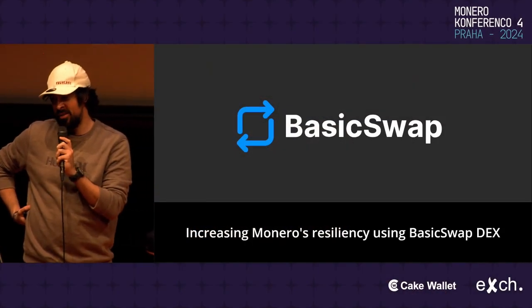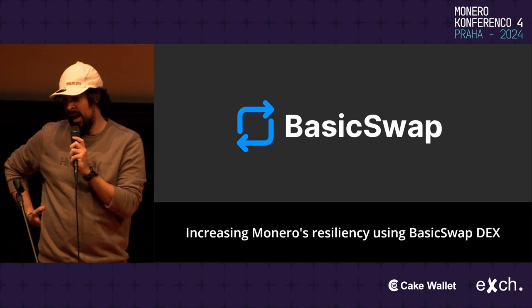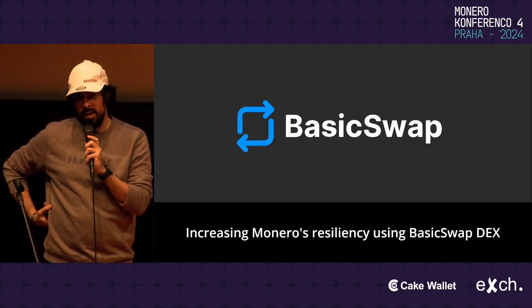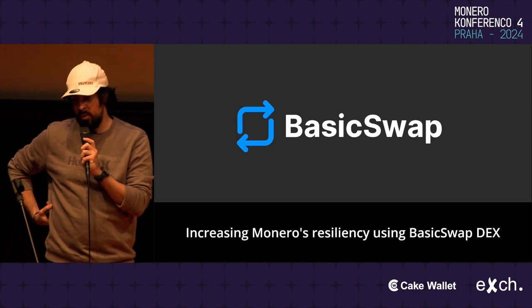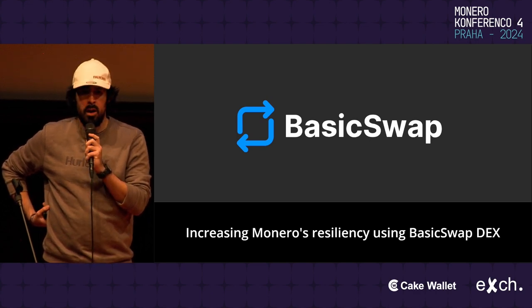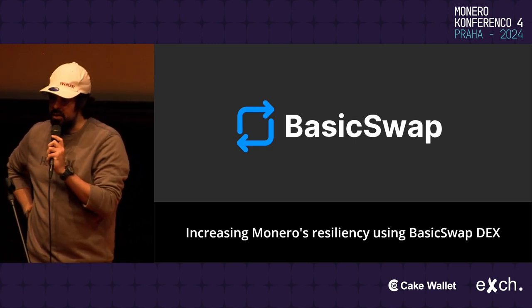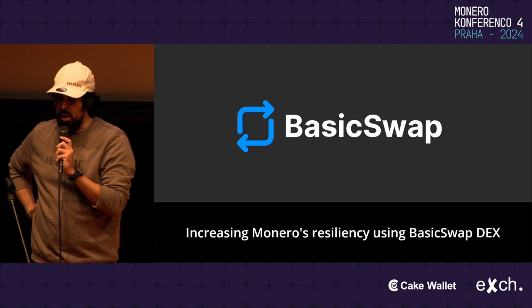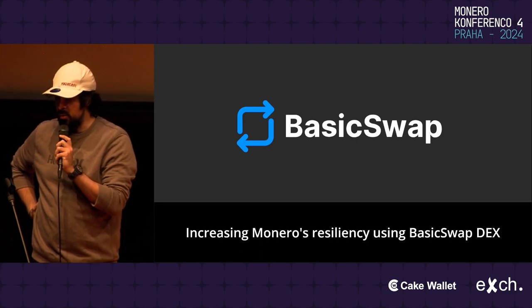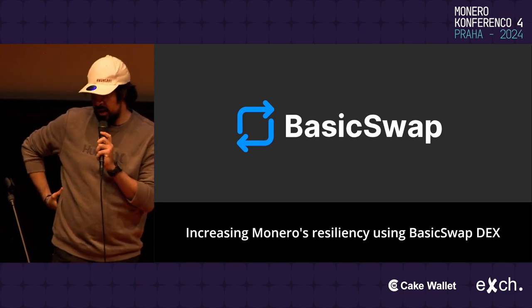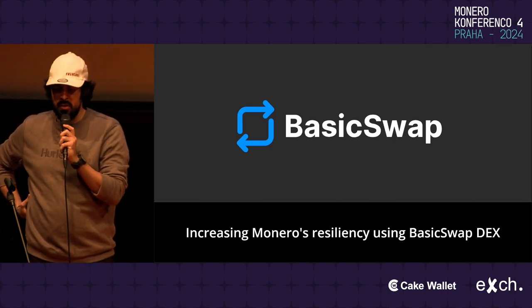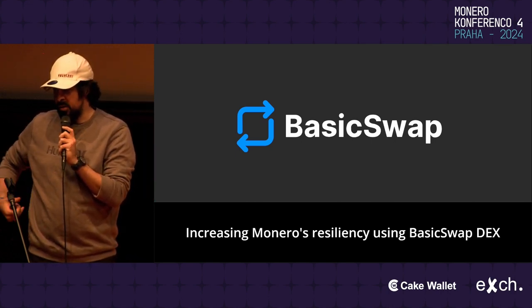Well, very happy to be here guys. I'm with BasicSwap. I'm here to show you guys the AtomicSwap-based DEX that we have right now. We presented something last year as well — we sort of went through the history of AtomicSwaps. Luke talked a little bit about AtomicSwaps from Monero, and in the past year we did some progress with the open-source DEX, and I'm just here to sort of catch you guys up to speed. If you're not familiar with BasicSwap, hopefully you'll be more familiar after this speech.